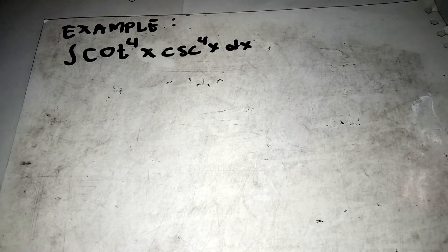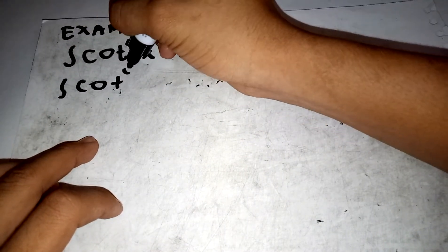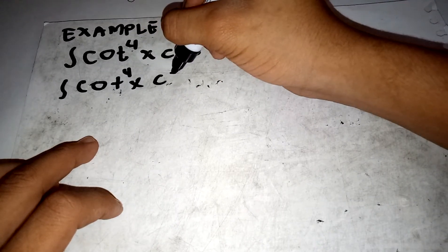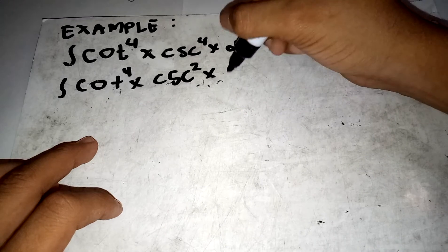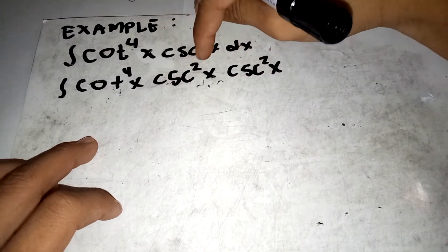Our example: what is the integral of cotangent to the fourth x times cosecant to the fourth x dx? As stated, we need to have a cosecant squared u to transform it into 1 plus cotangent squared u to apply our rule. First, copy cotangent to the fourth x, then split cosecant to the fourth x as cosecant squared times cosecant squared.